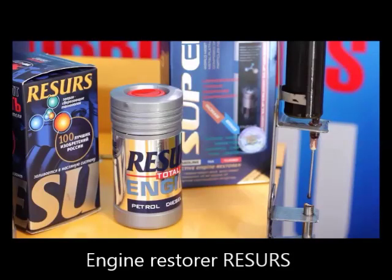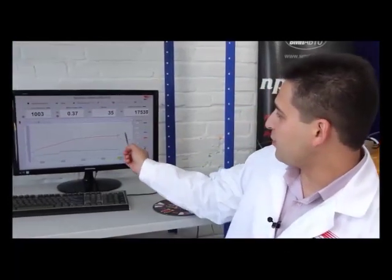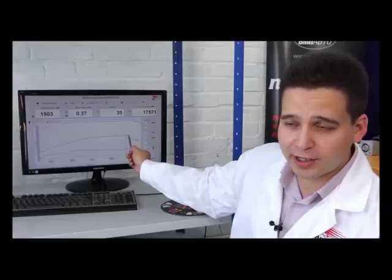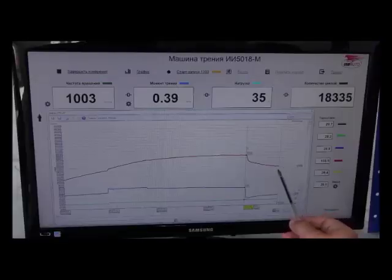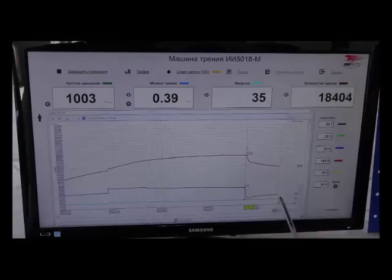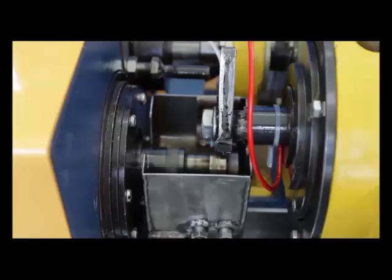Pay attention to the fact that after RESURS application, the temperature and the frictional moment decreased immediately. The temperature dropped from 222 to 170 and the frictional moment from 0.68 Nm to 0.36. After 10 minutes of work, we stop supply of oil with RESURS and count the time until tear occurs.